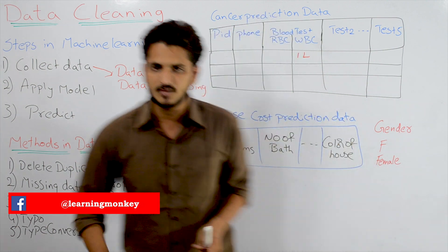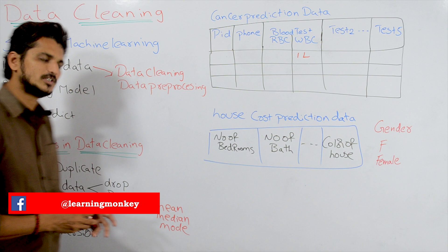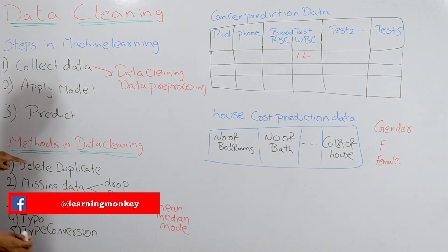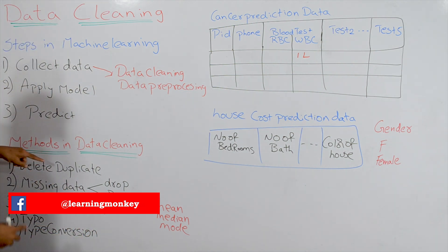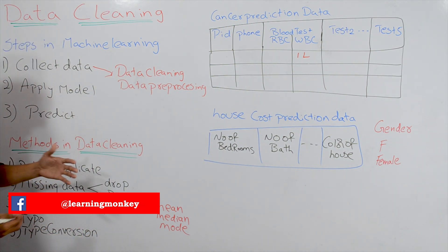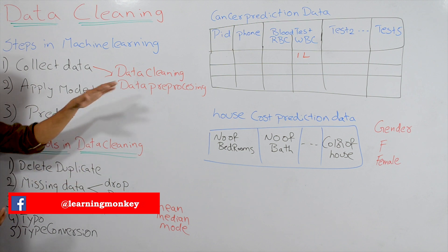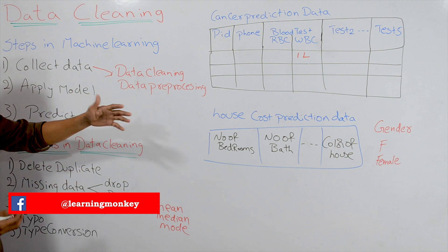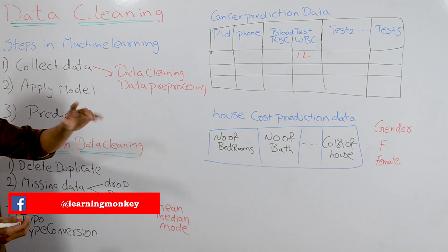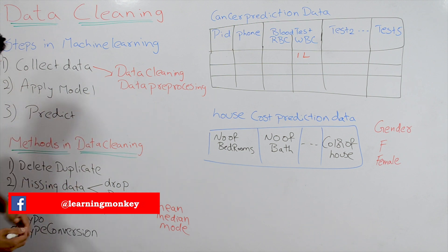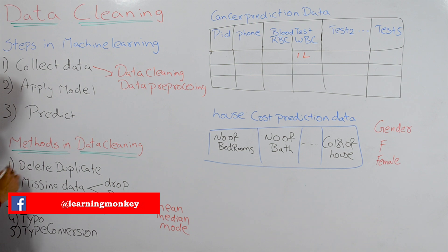Coming to our data cleaning methods, the first one is deleting the duplicate values. If you have any duplicate values in your data set, remove them.